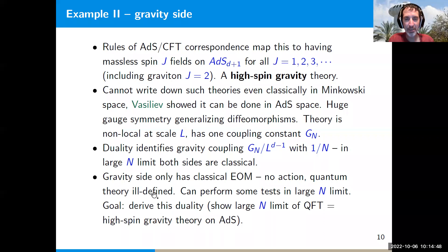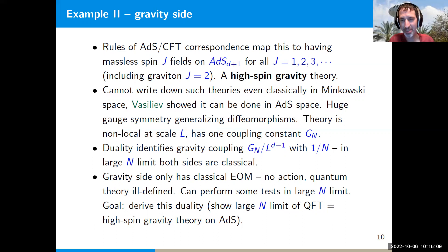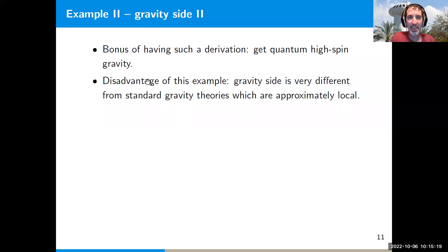Our goal in this talk is to derive this duality. Since the gravity side is only well-defined classically in the large-N limit, by derivation we mean showing that the large-N limit of the quantum field theory really gives a high-spin gravity theory on anti-de Sitter space. For any finite value of N, the quantum field theory then gives us a quantum version of these high-spin gravity theories. Since nothing else is known about these quantum versions, any construction would provide us with a quantum high-spin gravity theory.